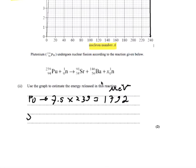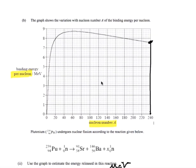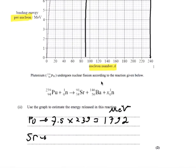For strontium with 91 nucleons, we go to about that point on the chart and come up to the top, reading about 8.6 MeV per nucleon. With 91 nucleons, that gives a total of 783 MeV.